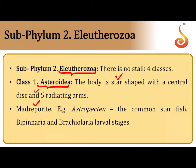The best example of Class Asteroidea is Astropecten, which is the common starfish. They also exhibit indirect development, so the larval stages are the bipinnaria and brachiolaria larva.